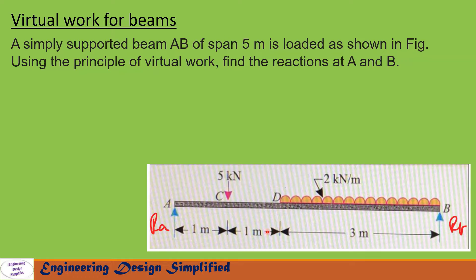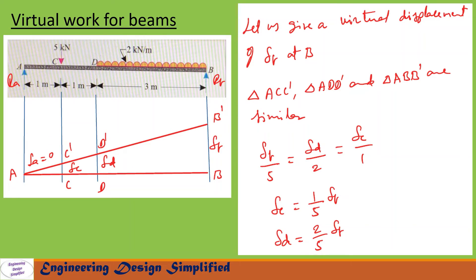A load of 5 kN is applied at point C; distance from point A to C is 1 meter. From D to B the span is 3 meters, and a uniformly distributed load of 2 kN per meter is applied as shown in figure. We need to find reactions at A and B using the principle of virtual work. Let us see in the coming slides how to solve this problem.